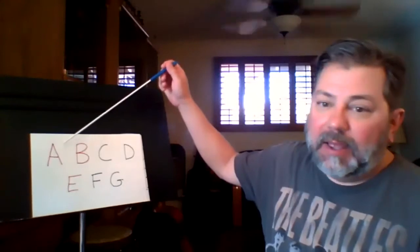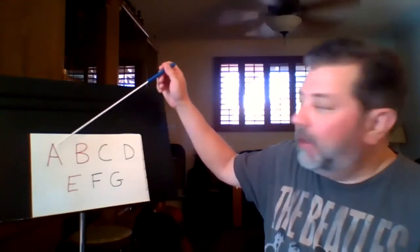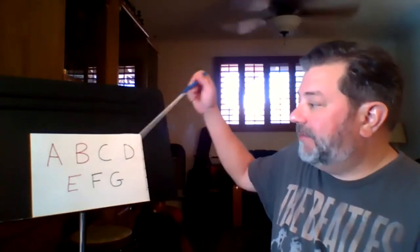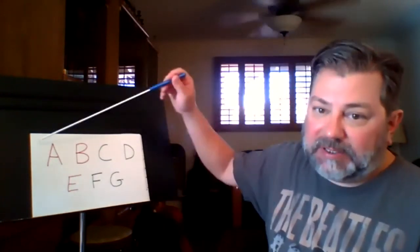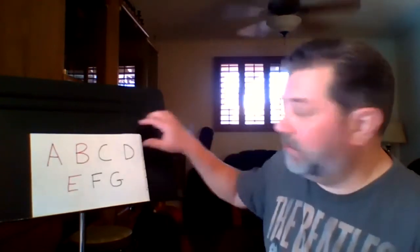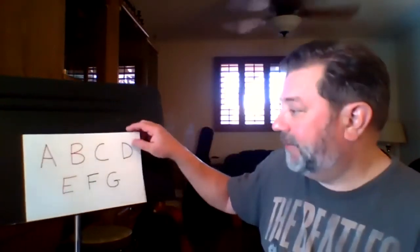First thing I have to remember is that the musical alphabet goes from A to G. A, B, C, D, E, F, G. Then after G it repeats again with A. A, B, C, D, E, F, G. So just remember don't go to H. After G you go to A.